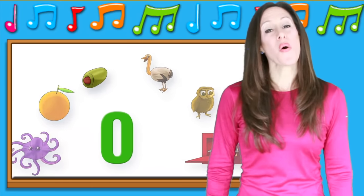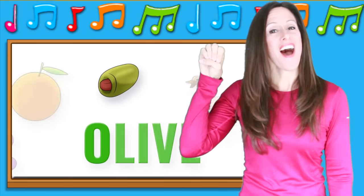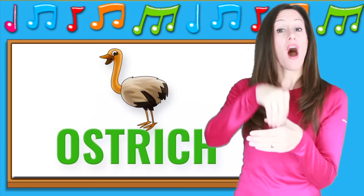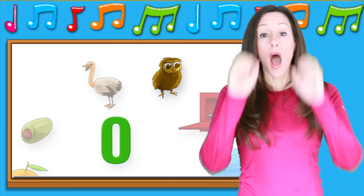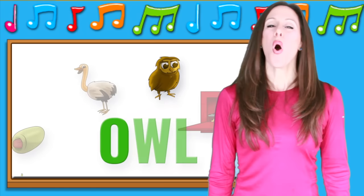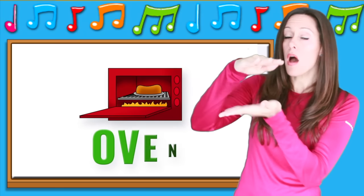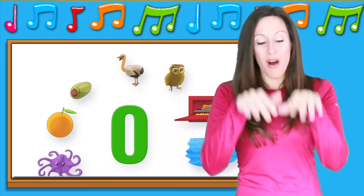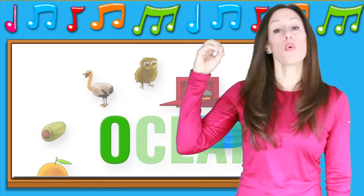O is for o-o-olive, o-o-olive, o-o-olive. O is for o-o-ostrich, o-o-ostrich. O is for o-o-owl, o-o-owl, o-o-owl. O is for o-o-oven, o-o-oven. O is for o-o-ocean, o-o-ocean, o-o-ocean.